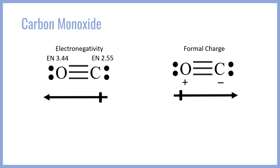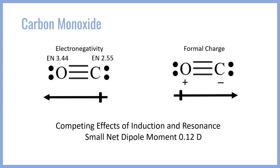So what is the real dipole moment of CO going to look like? It turns out that the competing effects of electronegativity, or induction, and resonance lead to a very small dipole moment for carbon monoxide of just 0.12 Debye. It's basically non-polar, which is very strange given that we have a C–O triple bond, which we'd expect to be extremely polar. However, in this case the two effects almost perfectly cancel one another.